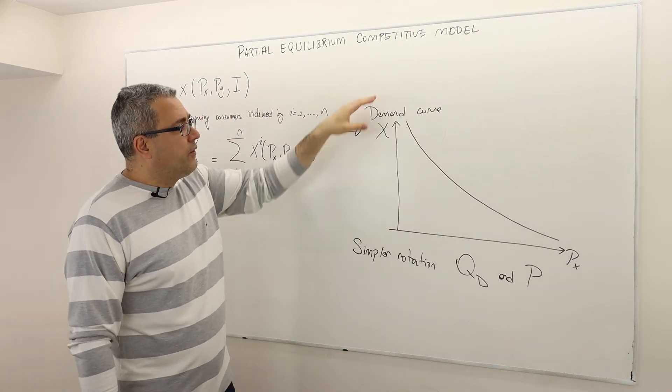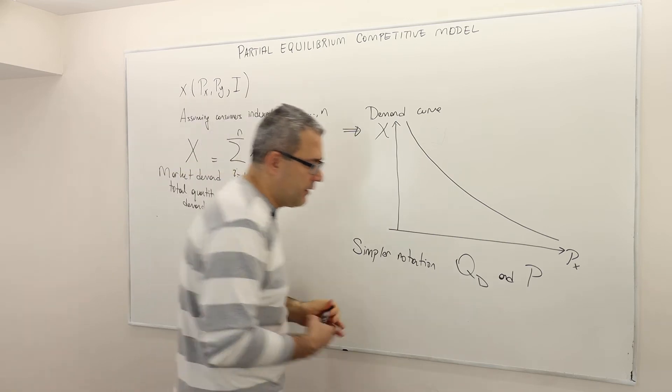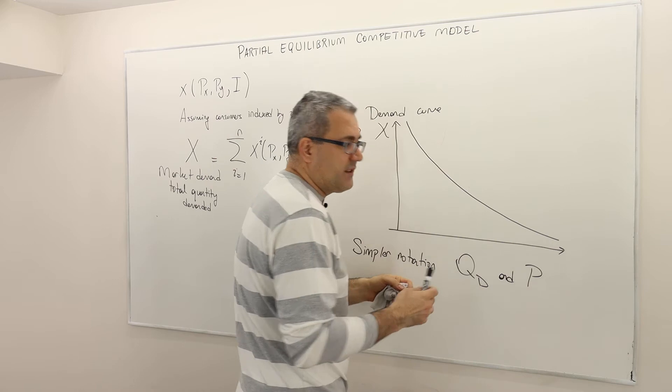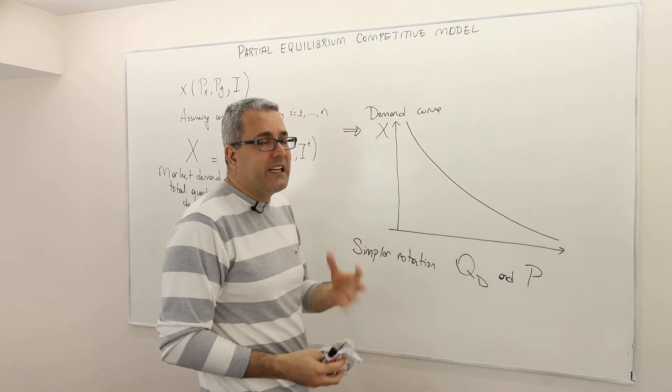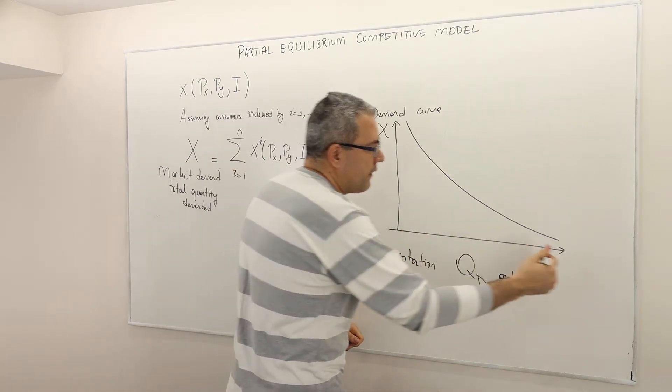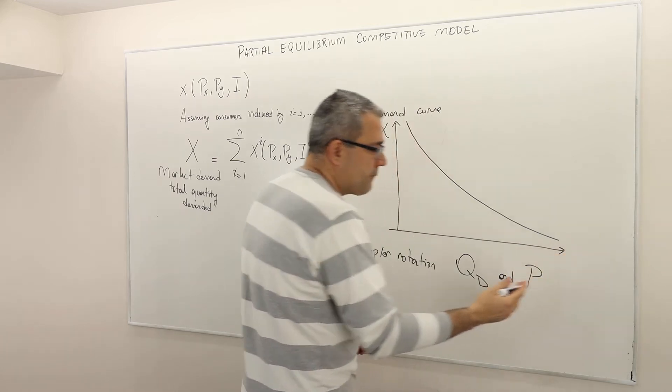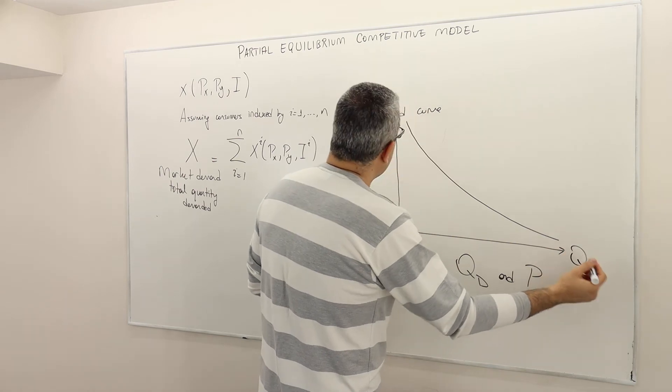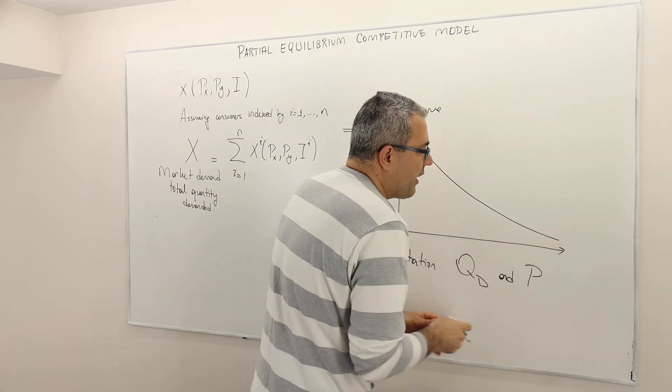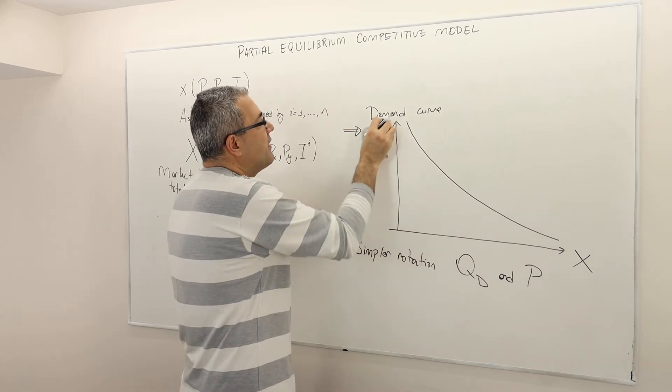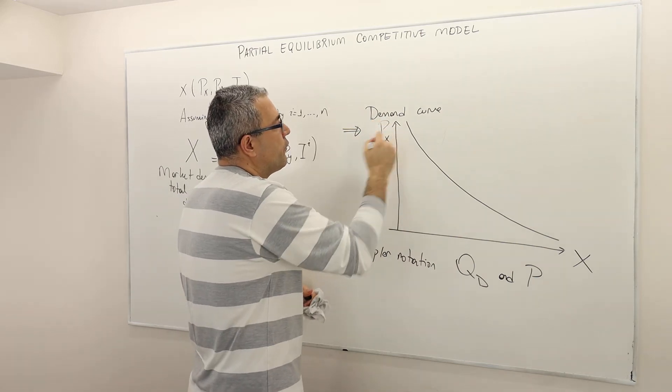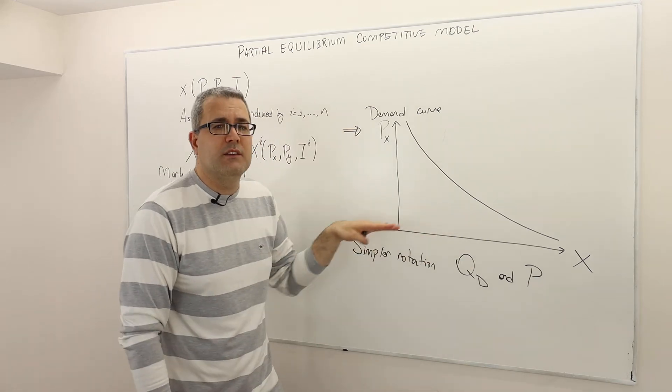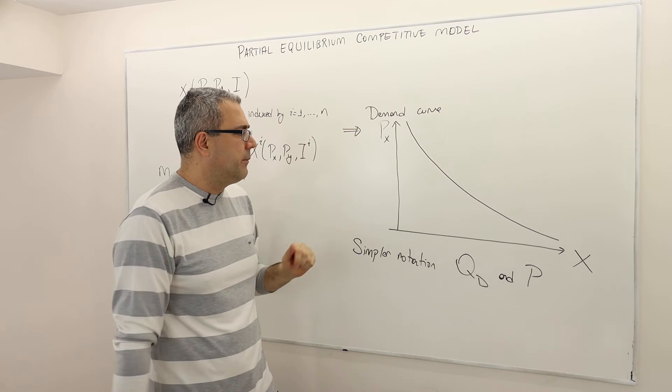Sometimes we put the price on the X-axis. Technically doesn't matter, but let's be sure about the standard protocol and follow this standard protocol. So we basically put the quantity demanded on the horizontal axis and the price of the good on the vertical axis. Prices are always on the vertical axis and the quantity demands are always on the horizontal axis. So be careful about that.